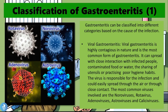Viral gastroenteritis is highly contagious in nature and is the most common form of gastroenteritis. It can spread with close interaction with infected people, contaminated food or water, the sharing of utensils, or practicing poor hygiene habits. The virus responsible for the infection could easily spread through the air or through close contact. The most common viruses involved are the noroviruses, rotavirus, adenoviruses, astroviruses, and caliciviruses.